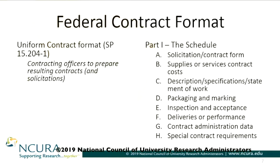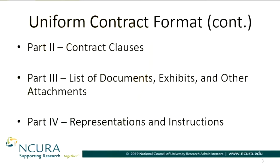Moving to the uniform contract format, continuing Part Two: contract clauses. These are all clauses that may be required by law, or any additional clauses not discussed in the schedule portion of the federal contract. There may be references made to other FAR clauses or agency supplements by the government or by the contractor. If they ever get complex — and honestly even if they're not — I still recommend putting in an index of all your contract clauses in Part Two, so you can signify what goes where and for what purpose.